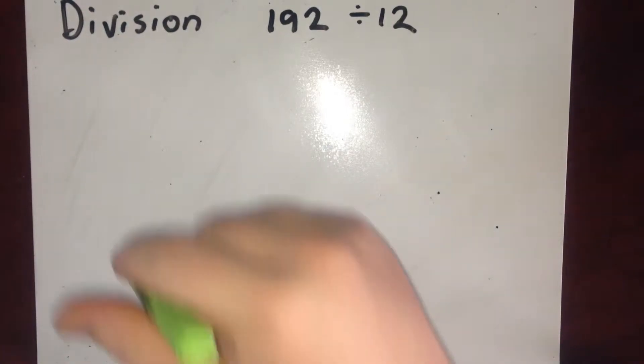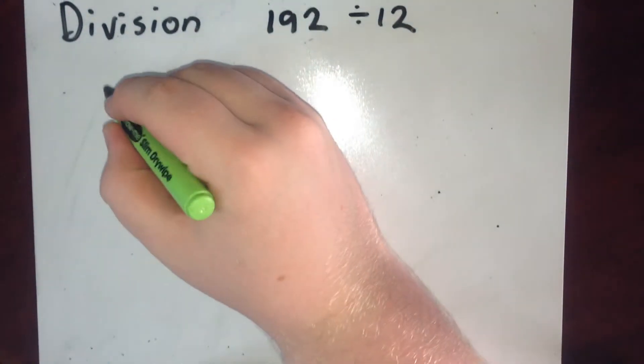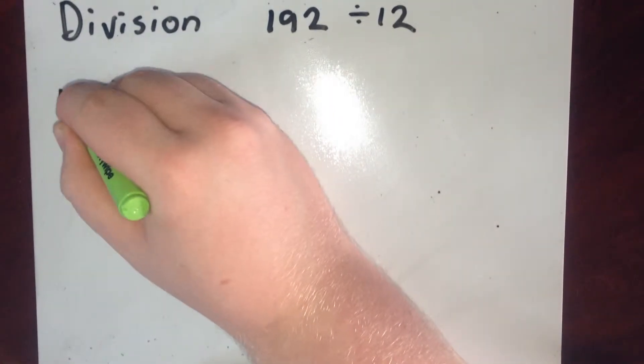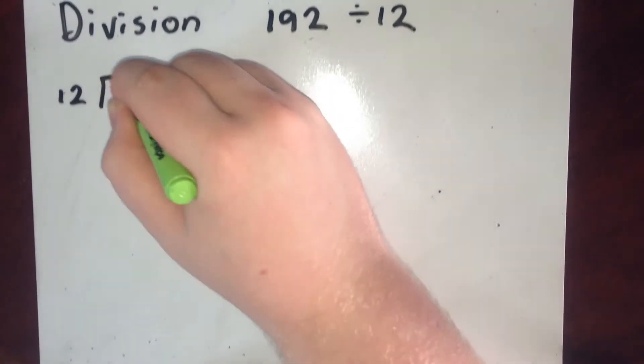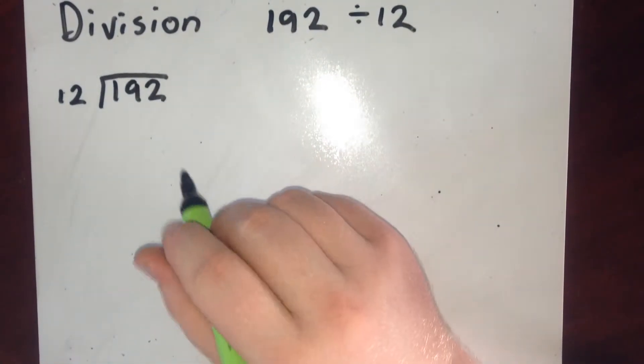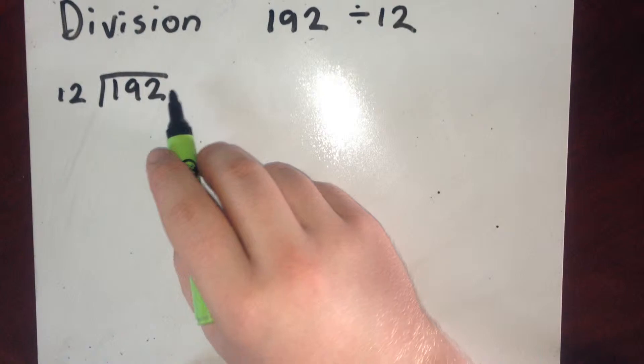So I'm going to start with long division. This is sometimes called the bus stop method because this line here reminds people of a bus stop. So I start.